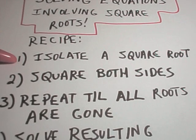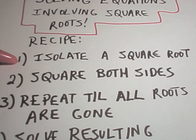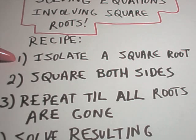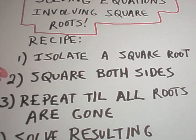The first thing you're going to do is isolate a square root. If there's only one square root, or whatever type of root it is, you'll get that by itself. If it's a square root, you'll square both sides. If it's a cube root, you would cube both sides, etc.